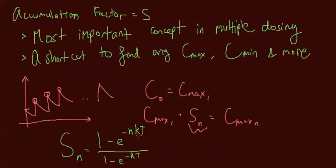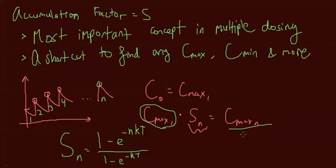This is a big equation, so how do you apply it? Most of the time you'll be given half-life, from which you can find K. You'll also be given the dosing interval T. And n is just whichever dose you're on — dose one, two, three, four, up to n. So if you want the seventh dose, plug in seven for n, find S_7, multiply by C max 1, and you get C max at dose seven.